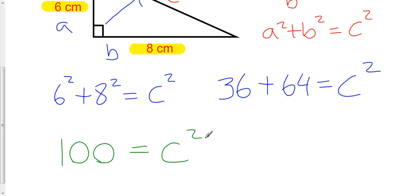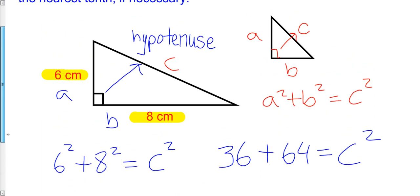Now, many students think that they're done here, and that would be a mistake. We're not actually done yet. What we've done is we've solved for C squared. We haven't solved for C. What we're looking for is C. If you notice, the Pythagorean relationship,